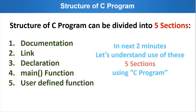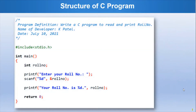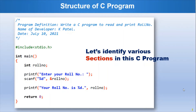In the next two minutes, let's understand the use of these five sections using a C program. To understand the structure of a C program, we will use a C program to read and print the roll number of a student. Let's identify the various sections in this C program.